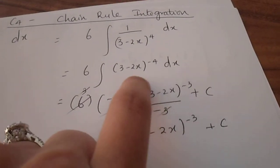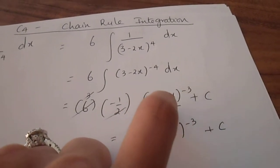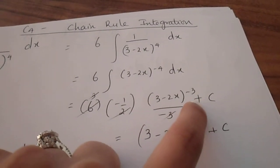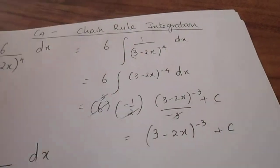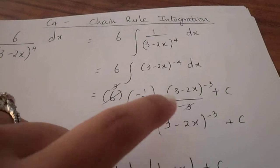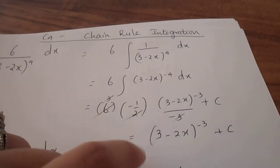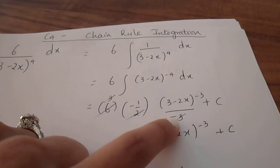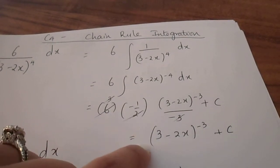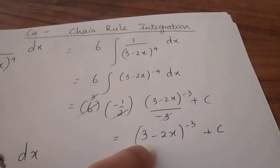Don't forget to divide the function by the new power. So 3 minus 2x to the power of minus 3 divided by minus 3 plus c. Don't fail to write down your plus c because we don't have any integral limits here. When you simplify and cancel down the constants, the final answer equals 3 minus 2x all to the power minus 3 plus c.